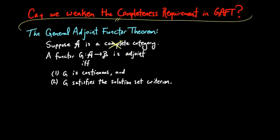We can weaken the completeness requirement to idempotent complete, and this will also require us to replace continuous by uniformly continuous. We call this weakened theorem the More General Adjoint Functor Theorem.